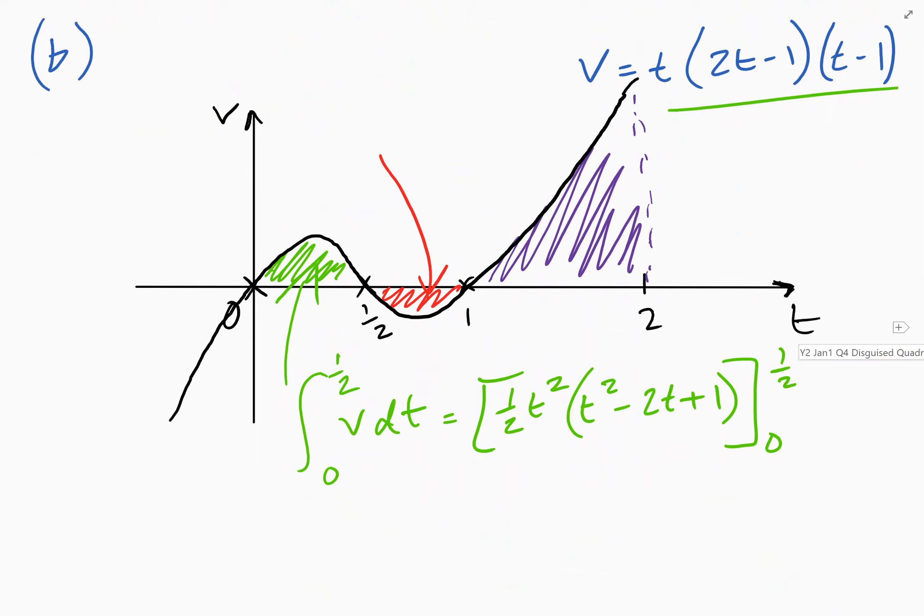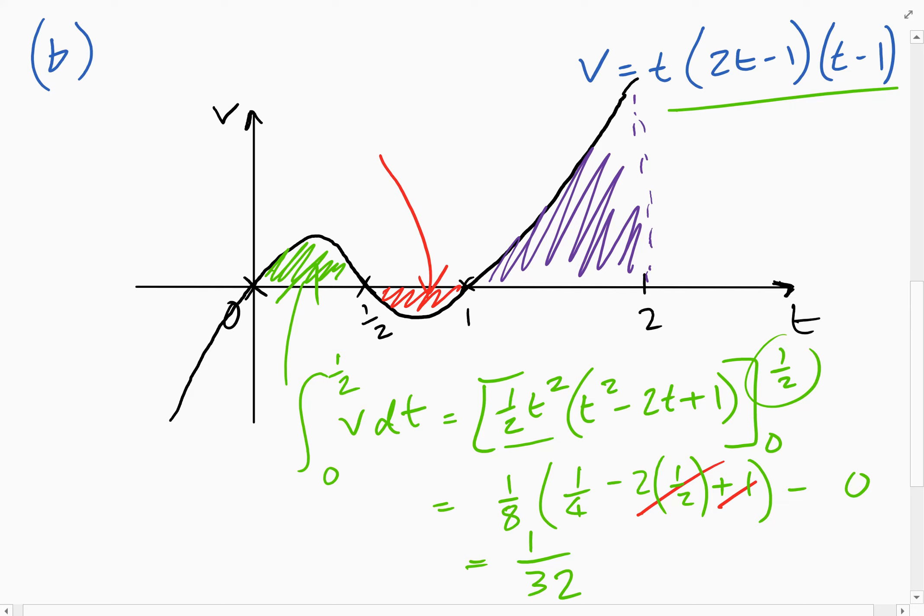Okay. So the green area there, when we substitute in a half, that will give us one eighth. You could just do this bit on your calculator if you like. So you get one eighth from doing a half t squared. Multiply that by a quarter minus two times by a half, which is minus one plus one. And when you put zero in, you're going to get zero. These would cancel. And so you just got one eighth times by a quarter. So that's one over 32. So that green area there is plus one over 32.